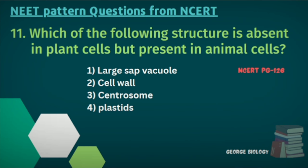Question eleven: Which structure is absent in plant cells but present in animal cells? Options: large sap vacuole, cell wall, centrosome, plastids. The answer is centrosome. Centrioles are also present; a pair of centrioles with centroplasm is called a centrosome.